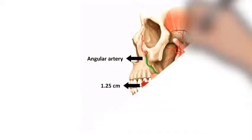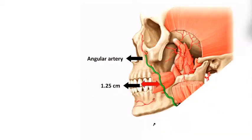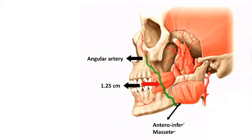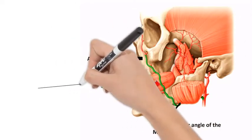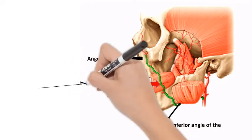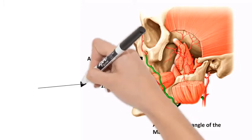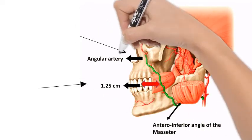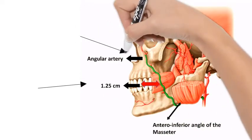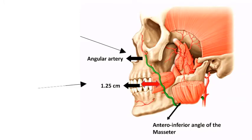In the face it runs upwards and medially obliquely with a tortuous course. The tortuous course prevents the artery from being stretched during movement of the mandible or muscles of the face. It runs upward 1.25 centimeters across the cheek to the angle of the mouth, then ascends along the side of the nose, and ends at the medial canthus of the eye as the angular artery.